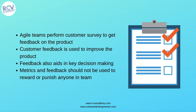Metrics and feedback received from customer surveys should not be used to reward or punish any team member in agile. Quality and product release are the collaborative responsibility of the whole team. Whether the feedback comes from customer surveys or from internal metrics such as defect density rate or other testing metrics, all of those metrics should only be utilized to improve the product, not to reward or punish anyone on the team.